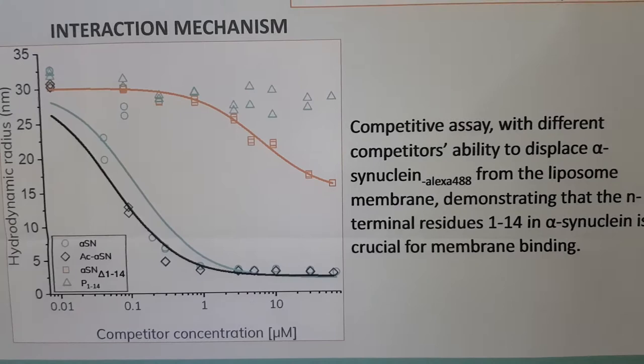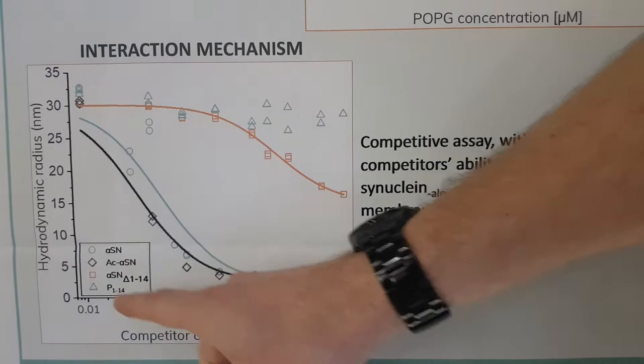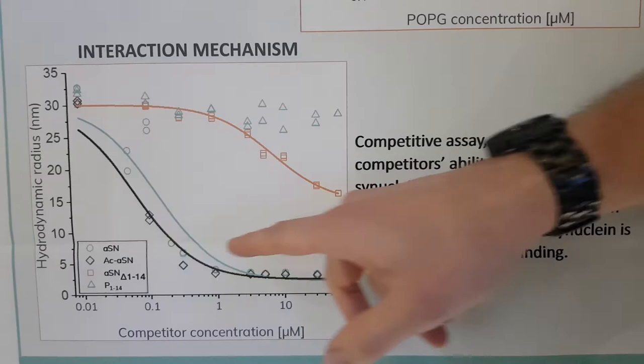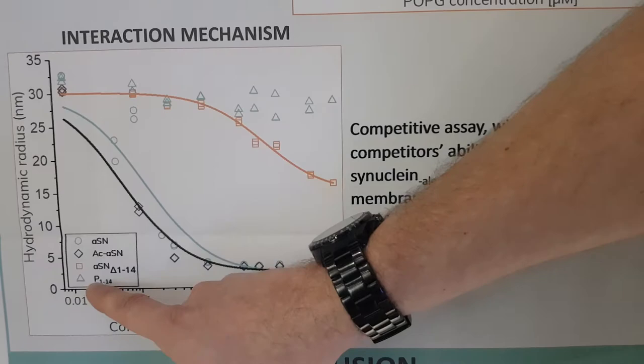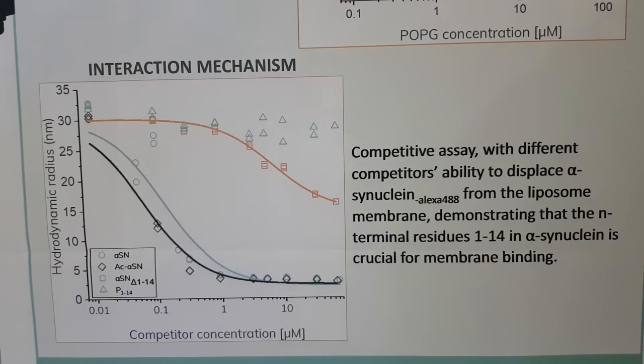We then looked at some peptide fragments of the molecule. If we delete the first 14 amino acids in the N-terminal, the affinity is clearly impaired — so these N-terminal residues clearly have a distinguished role in the interaction. The peptide fragment alone showed no interaction at all.